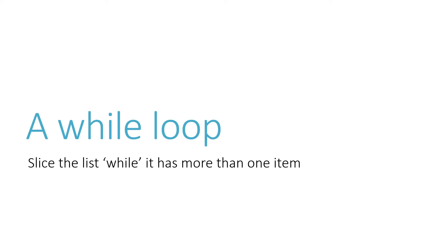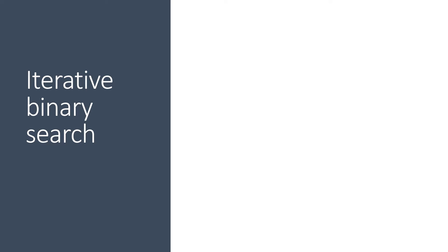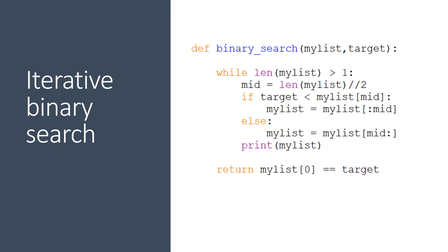The way that we've learned is using a while loop, where we keep slicing the list while it has more than one item. This is the iterative binary search function — we call it iterative because it uses a while loop, which is an iterative structure. When the loop is completed we compare the remaining value in the list to the target value and return the value of this boolean expression to the main program.